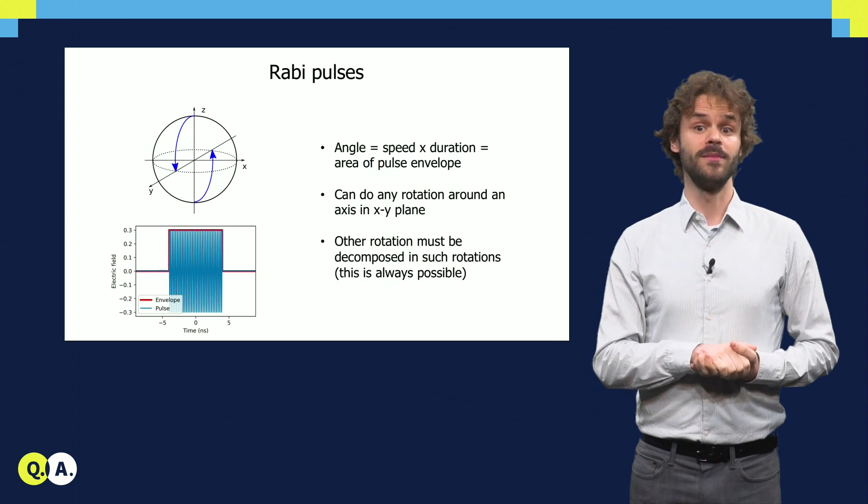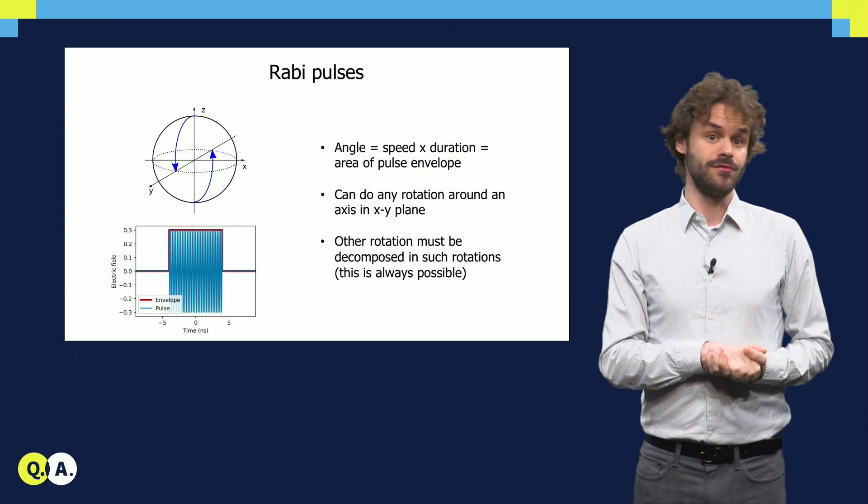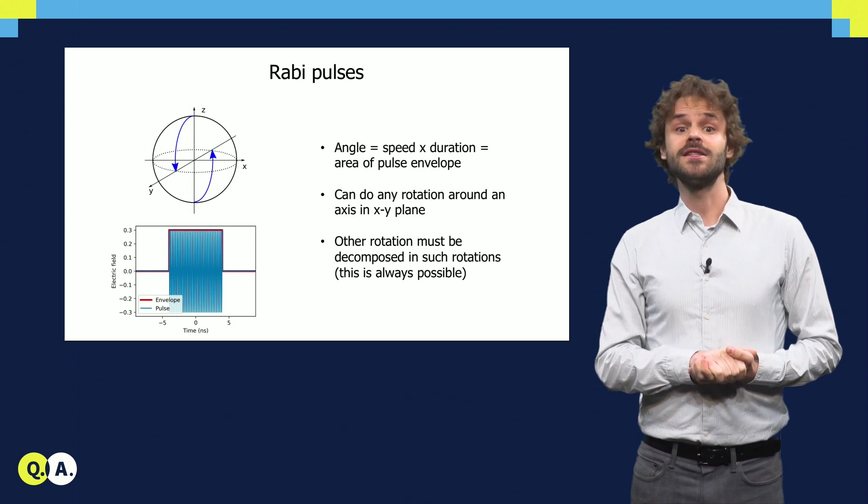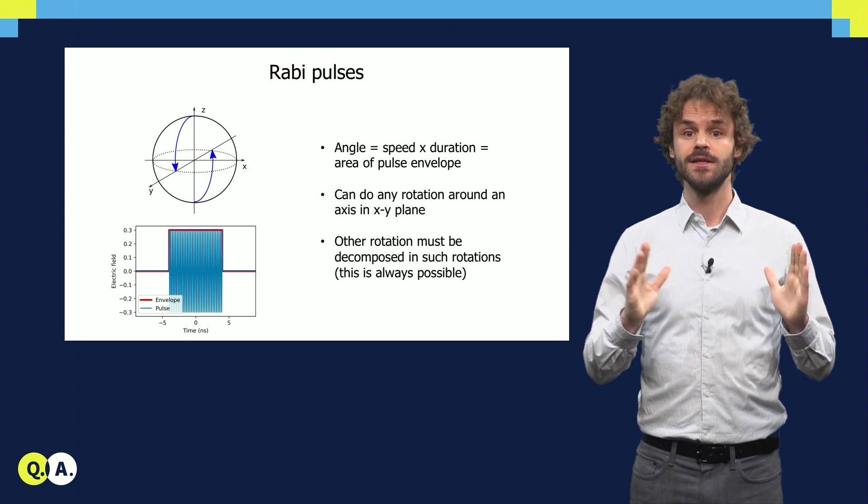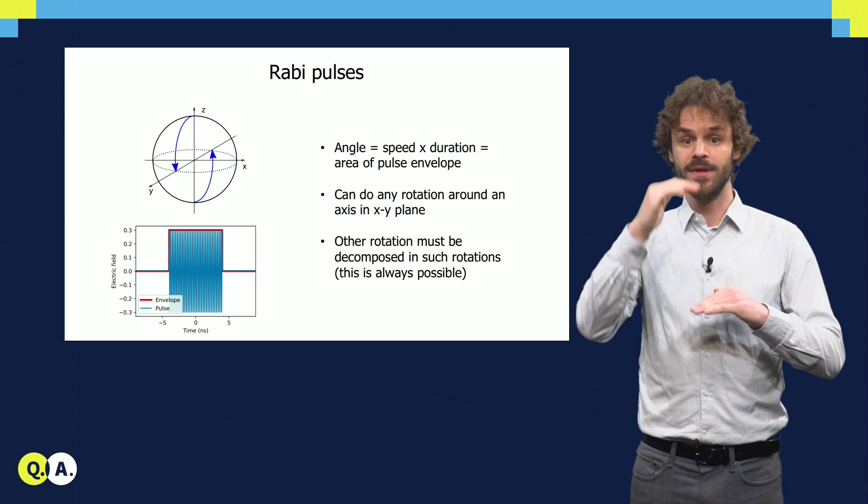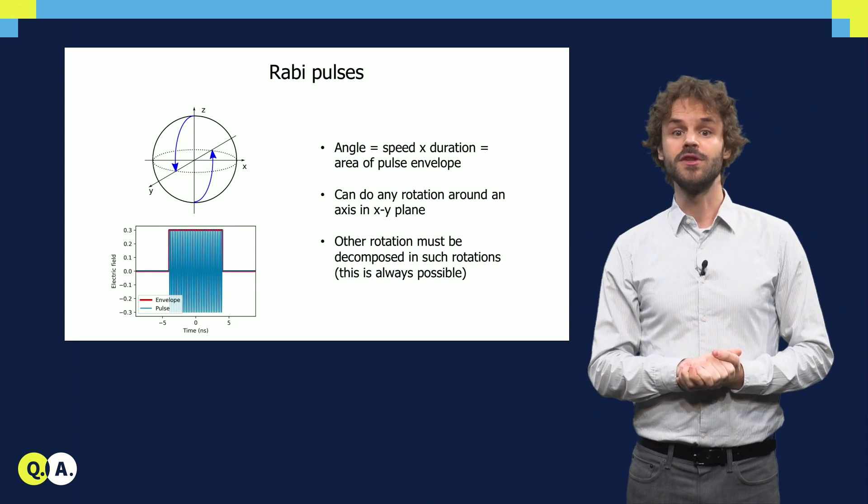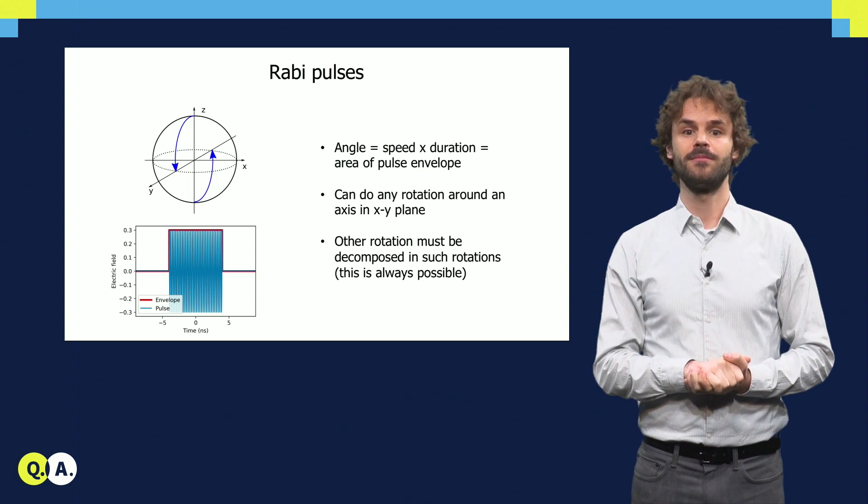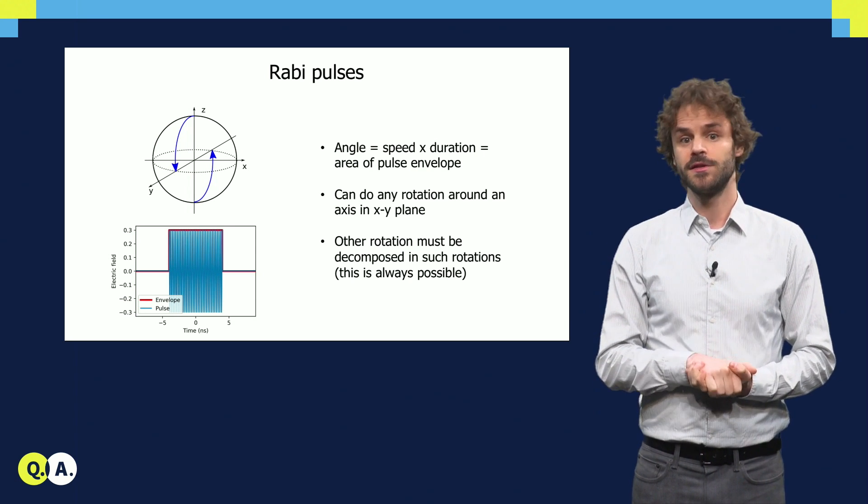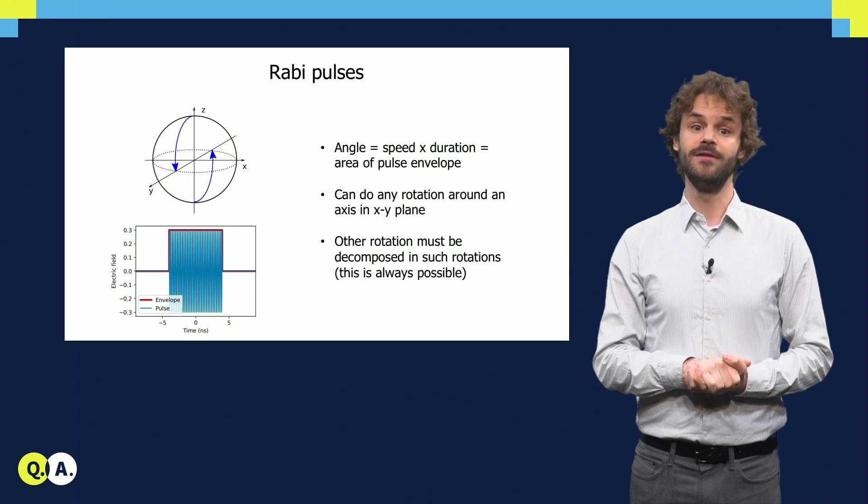In order to perform a desired gate, for instance, a rotation by 90 degrees around the x-axis, we thus need to apply a short pulse with the correct phase, amplitude and length. The rotation angle is determined by the product of length and amplitude, that is, by the area under the pulse envelope.